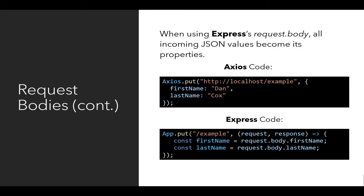Because this Express code understands all incoming requests as JSON, it converts the text back into properties once again. On the client side they exist as properties of an object — firstName with value Dan, lastName with value Cox — and then Express handles converting those back into JavaScript objects as part of the request.body object. So we see request.body.firstname and request.body.lastname, matching the exact capitalization of the properties on the client side, using app.use with express.json to parse all incoming request body text.